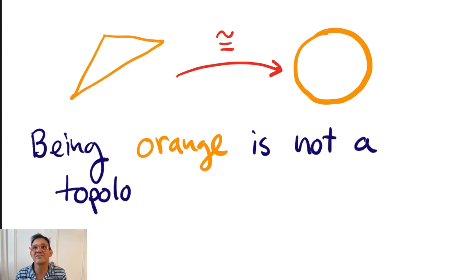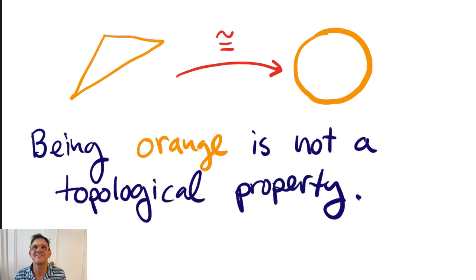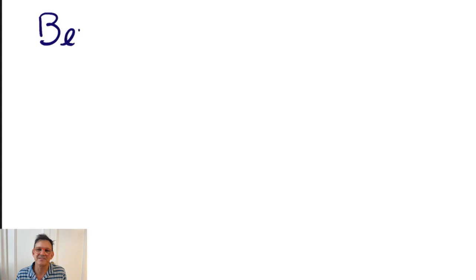Being orange isn't a topological property either. In other words, if I can draw a space using the color orange, the color orange itself isn't part of the topology of the space. This might seem obvious, but we often describe topological spaces in ways that are not topological.